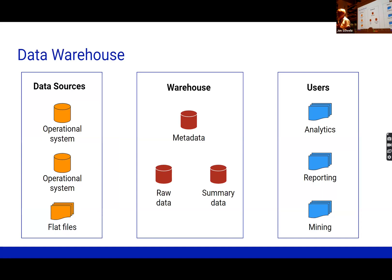We probably need to summarize that data, because very often when we're making decisions, we're not making decisions on the individual transactions — we're wanting to aggregate things and see patterns in the data. We don't need to see personally identifiable information in order to do that; it's much better to have summary data. So we could be doing some analytics on it, it may be for reporting, and it may be for mining or machine learning algorithms.